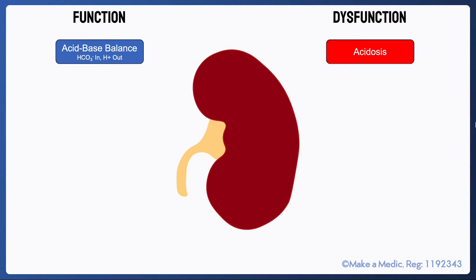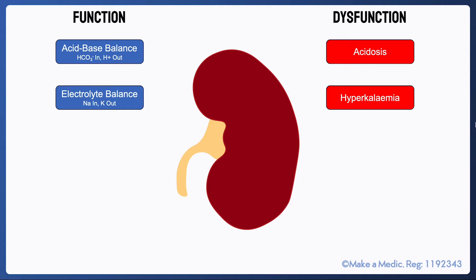The kidneys also play a role in the maintenance of plasma osmolality, primarily by adjusting the absorption and excretion of sodium and potassium. The kidneys are the primary route by which potassium is removed from the body, so a loss of this function results in hyperkalaemia.